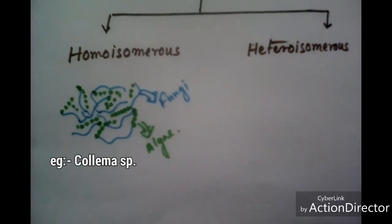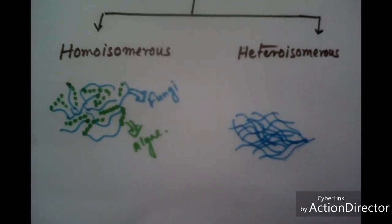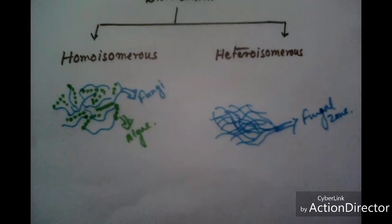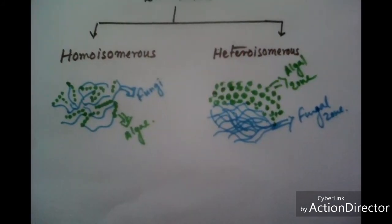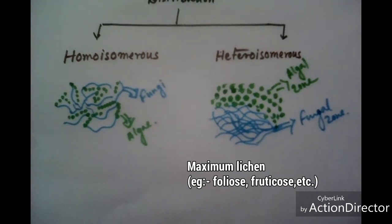In case of heteroisomerous lichen, fungal zone and algal zone are separately arranged, and in this type of thallus, upper cortex, lower cortex, and medulla are present.